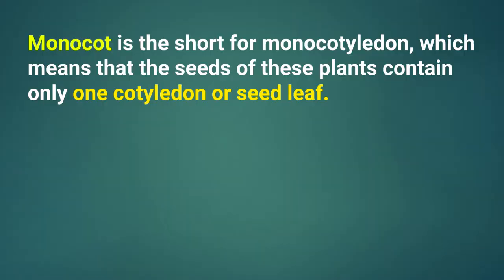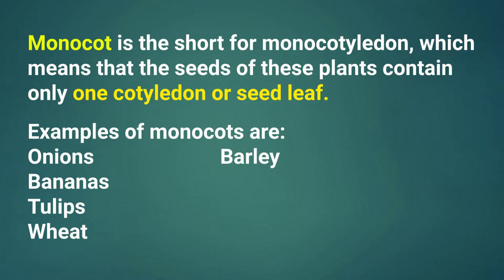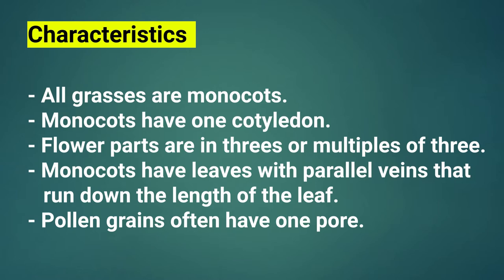Monocots is short for monocotyledon, which means that the seeds of these plants contain only one cotyledon or one seed leaf. Examples of monocots are onions, bananas, tulips, wheat, barley, maize, and daffodils. What are the characteristics? What do they have in common? All grasses are monocots.